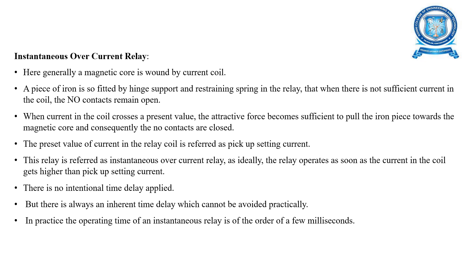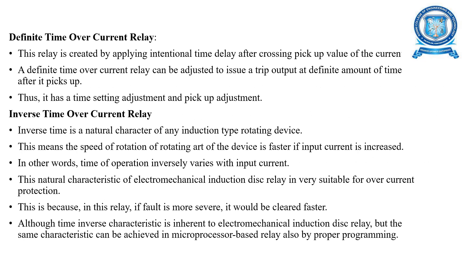This relay is referred to as an instantaneous overcurrent relay because ideally it operates as soon as the current in the coil gets higher than the pickup setting current. In practice, the operating time is in the order of a few milliseconds. Next is the definite time overcurrent relay, which is created by applying an intentional time delay after passing the pickup value of the current. It has both a time setting adjustment and a pickup adjustment.